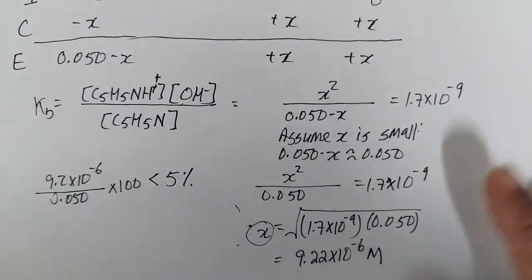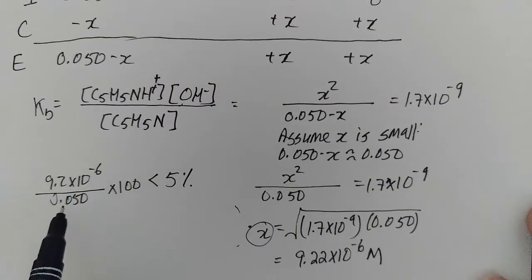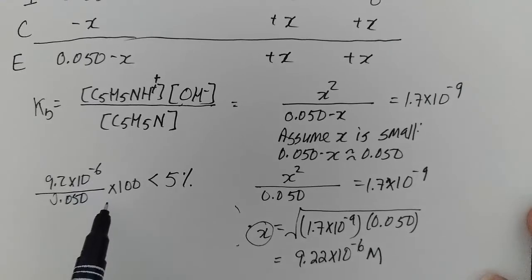You can omit the quadratic rule. And so 9.2 times 10 to the minus 6 divided by 0.050, multiplying it by 100.